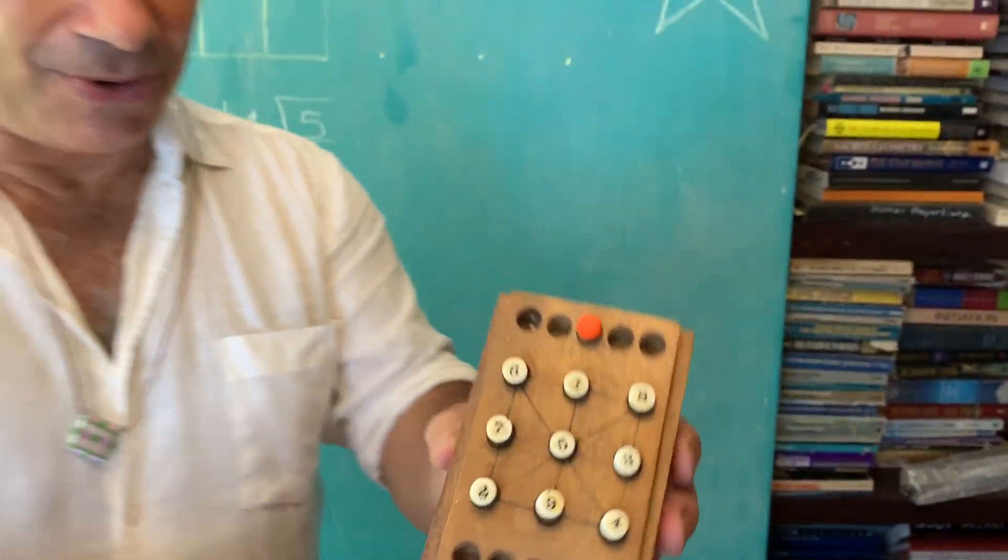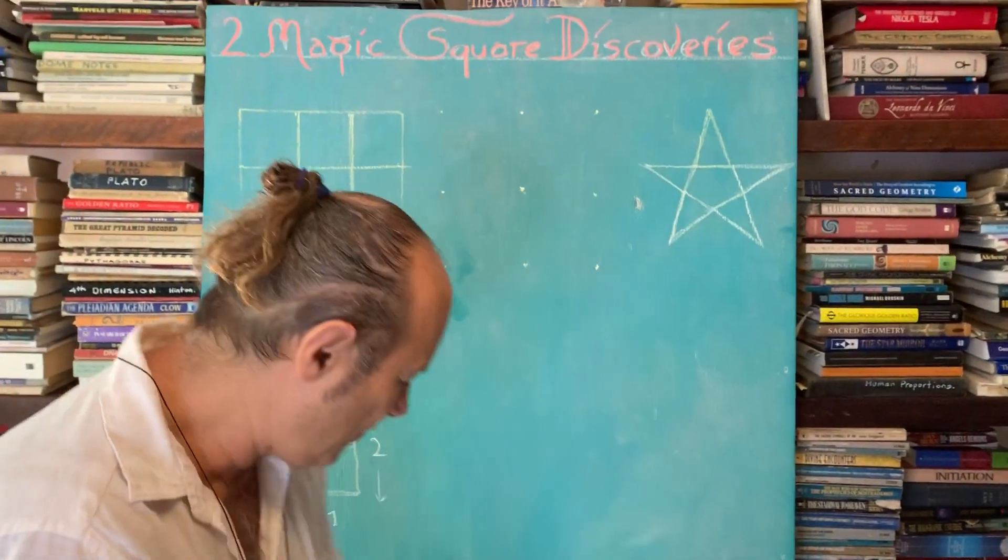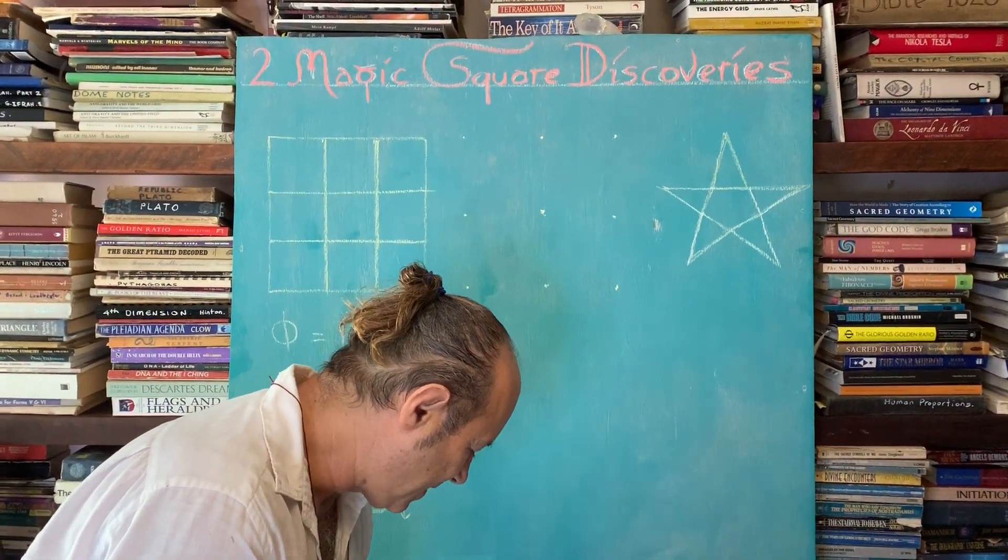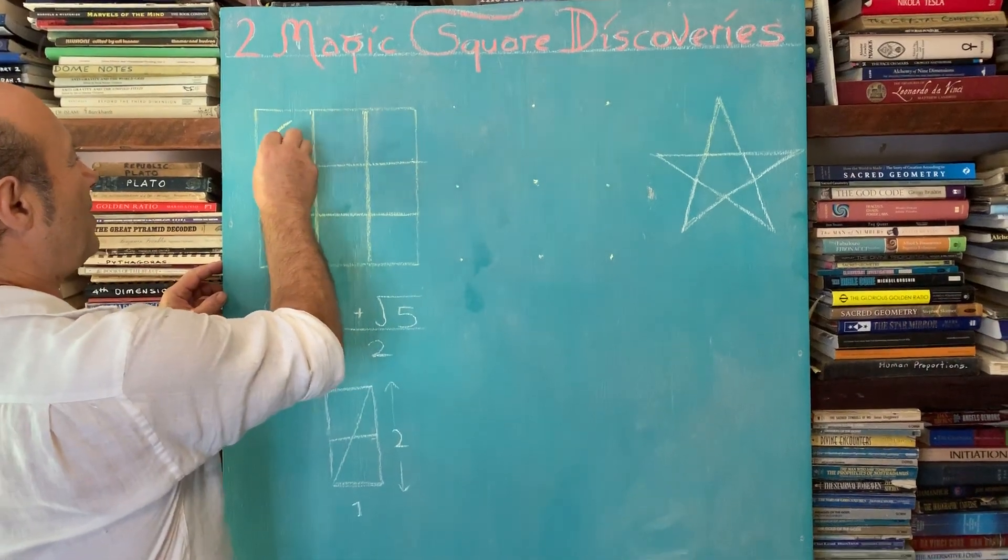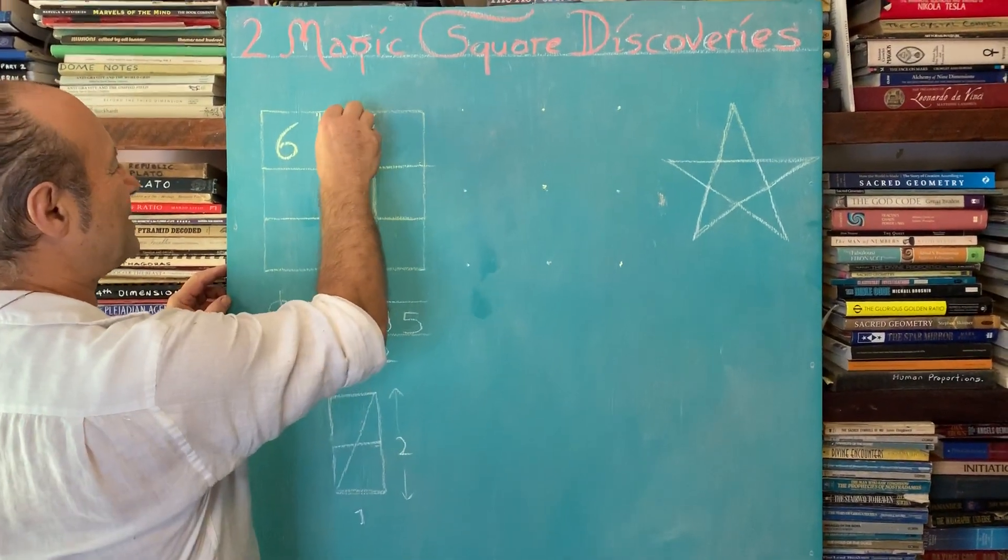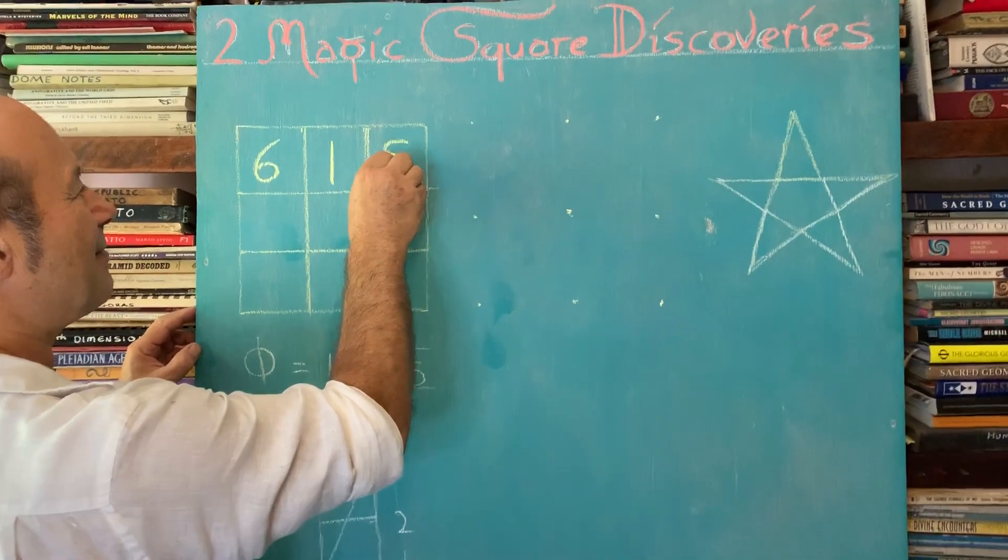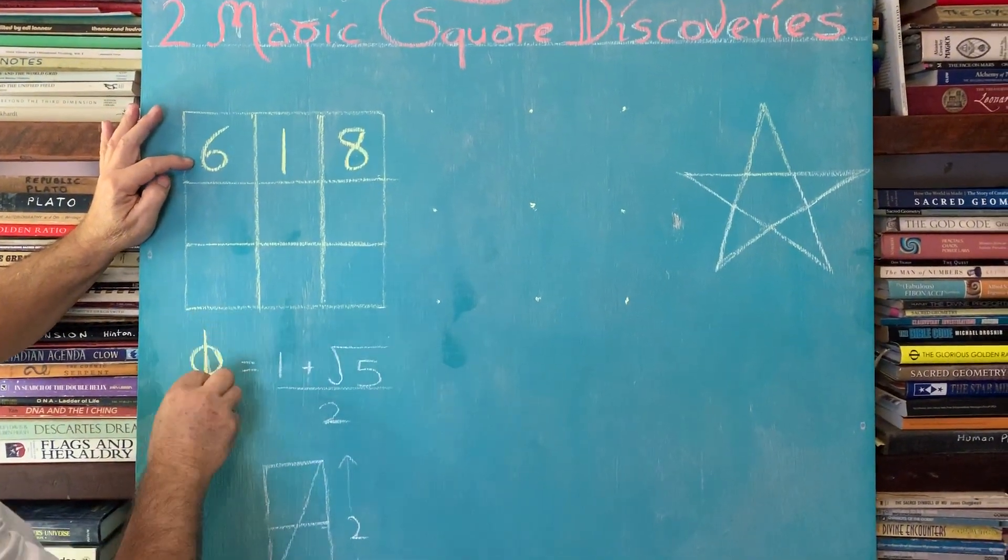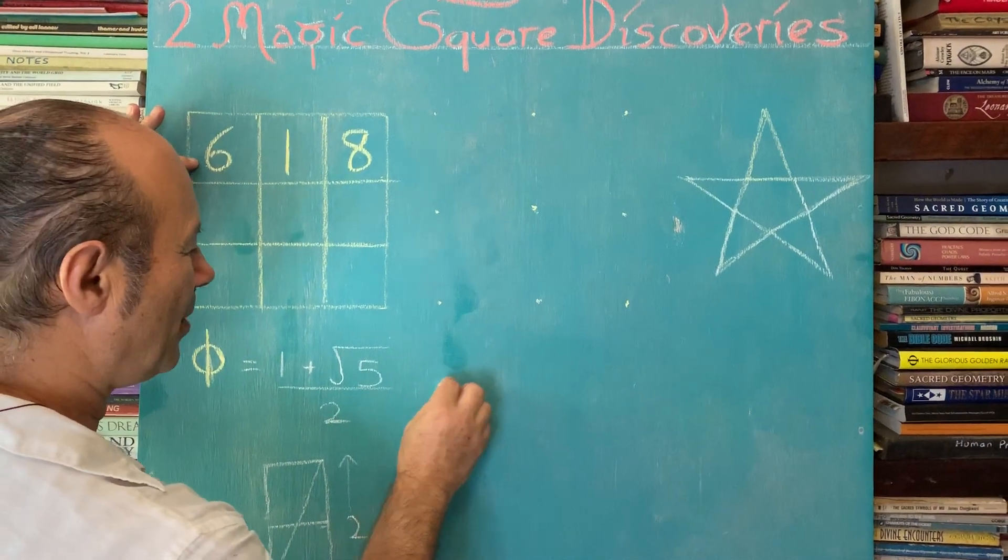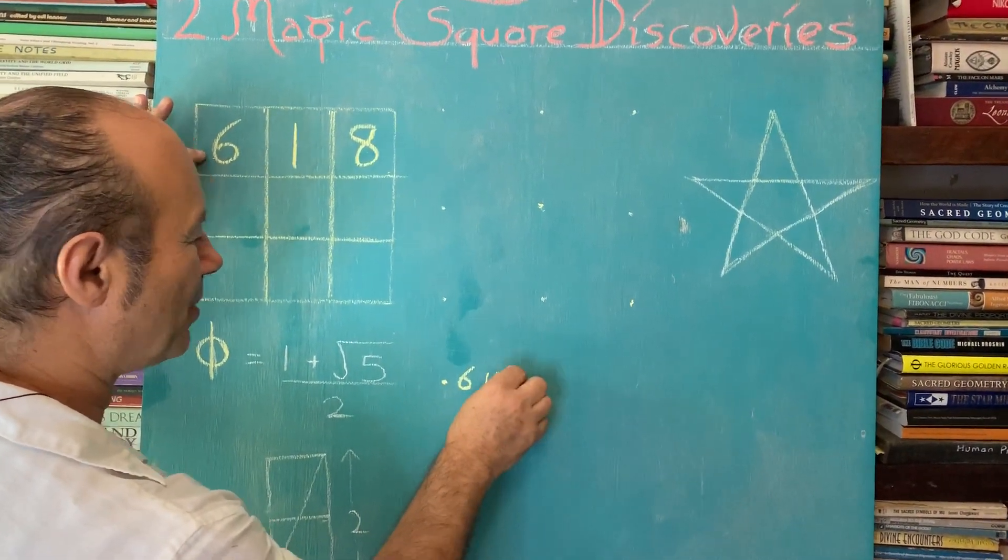I'm going to draw that on the board and we're going to convert the numbers into art. So we've got a three by three frame of nine cells. We notice that when we write 6 1 8, it's actually got to do with the phi ratio. Phi is 0.618 or 1.618.